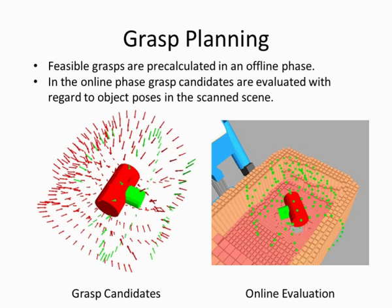Grasp planning is divided into offline and online phases. In the offline phase, we prune generally infeasible grasps, while in the online phase, grasps are evaluated in the current scene.